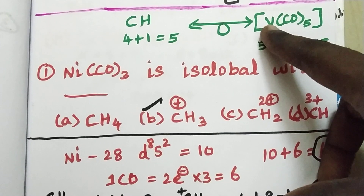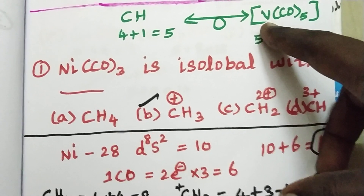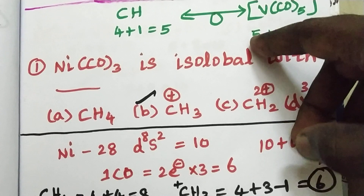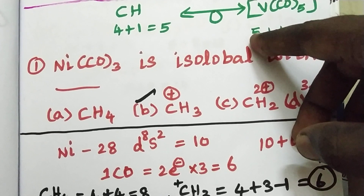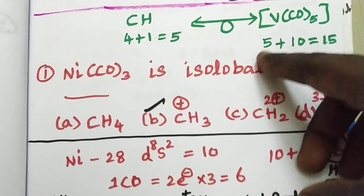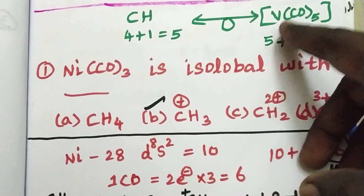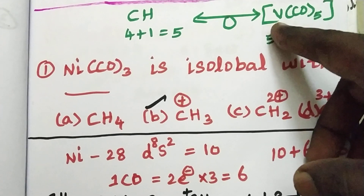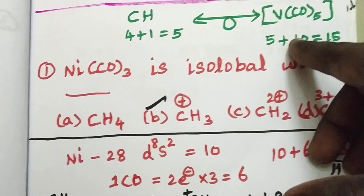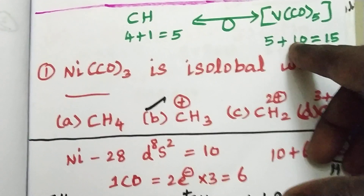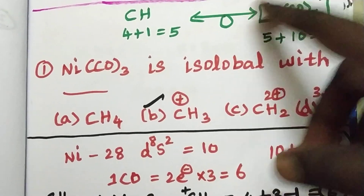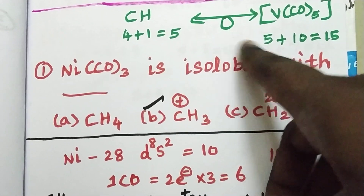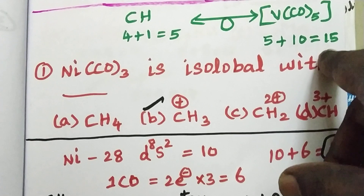Vanadium is atomic number 23 — Scandium, Titanium, Vanadium — with configuration D3, 4S2, giving 5 valence electrons. For one carbon: 2 electrons, and 5 times 2 is 10, giving a total of 15. So a 5-electron species is isolobal with a 15-electron species.